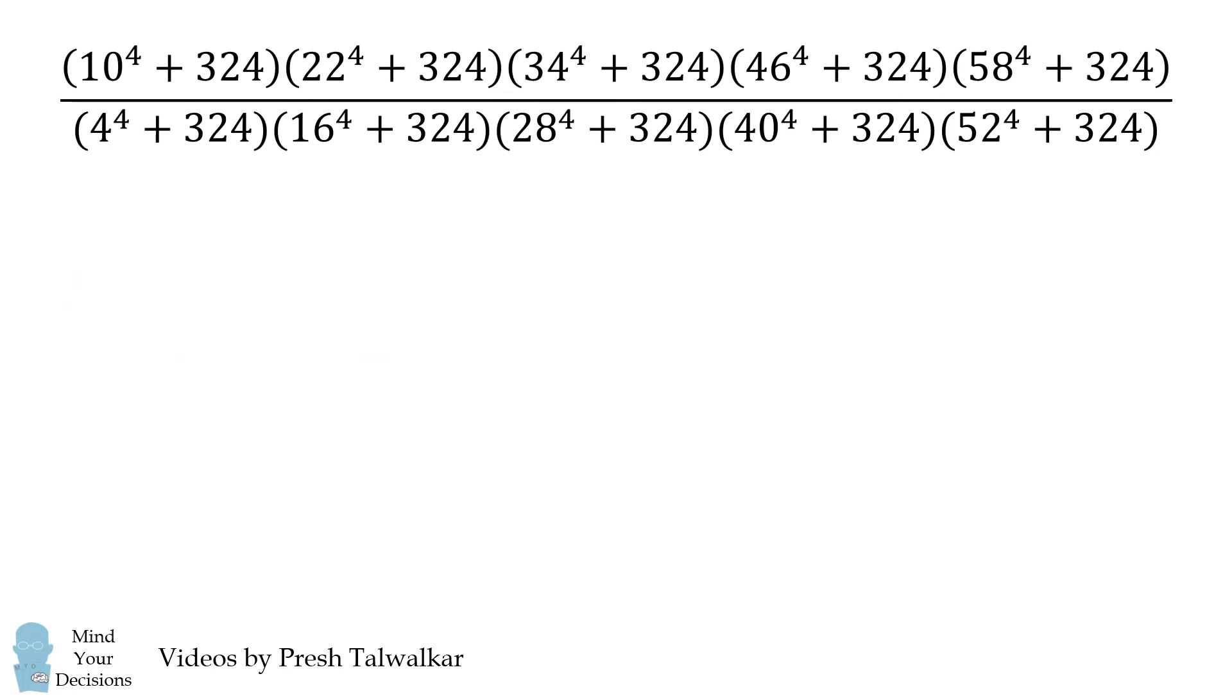So how can we simplify this fraction? We'll get started by identifying a pattern. Every single parenthetical term in this fraction is of the form x^4 + 324. Furthermore, we can factor 324 into 4 times 3^4. How can we simplify this?